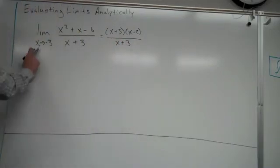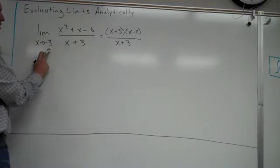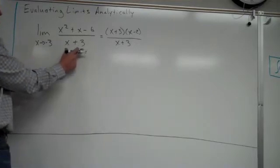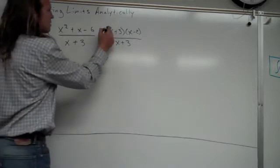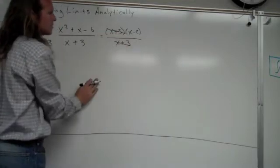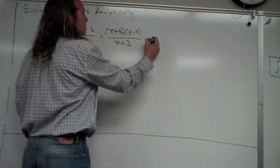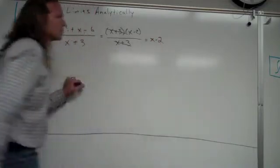But the great thing here is, I notice, my negative 3 is my problem issue here. That's what made this 0 in the denominator. Look it, it's going to be canceled out. And it'll leave me with x minus 2.